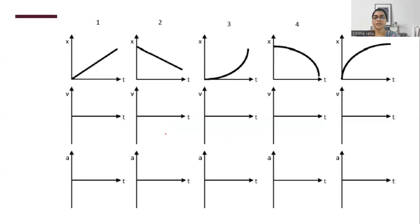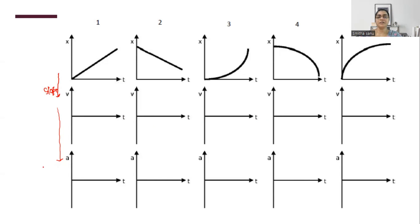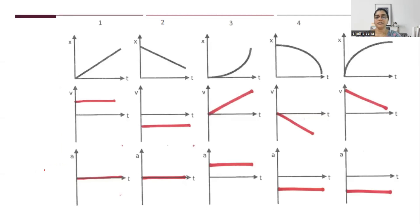Let's now come to the x-t, v-t, and a-t graphs, which are very important for understanding kinematics. The trick is: the slope of the position-time graph gives you velocity. Take the slope of the first graph to get the second, and slope of the second gives the third. The slope of a linear graph is constant, so velocity is a positive constant. Slope of a flat graph is zero, hence acceleration is zero.